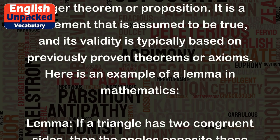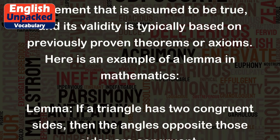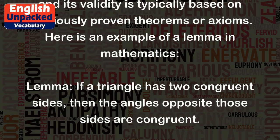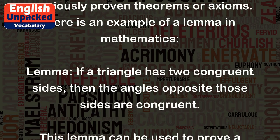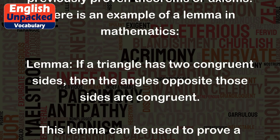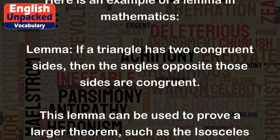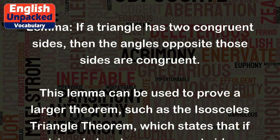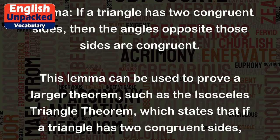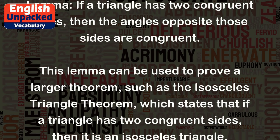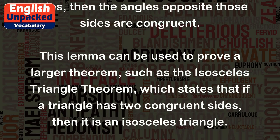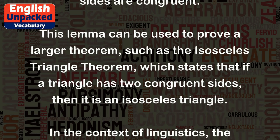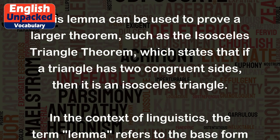Here is an example of a lemma in mathematics. Lemma: if a triangle has two congruent sides, then the angles opposite those sides are congruent. This lemma can be used to prove a larger theorem, such as the isosceles triangle theorem, which states that if a triangle has two congruent sides, then it is an isosceles triangle.